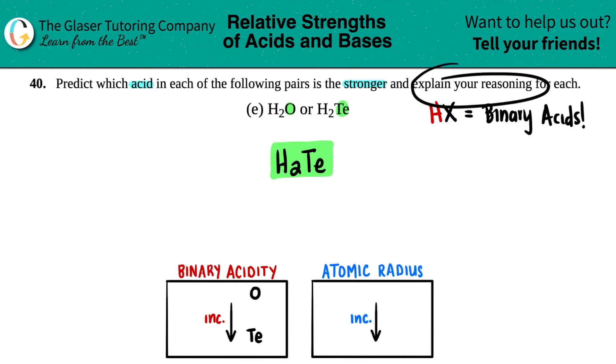The reasoning behind this is it's linked with atomic radius. As you go down a group as well, you become bigger and bigger—your atomic radius increases.